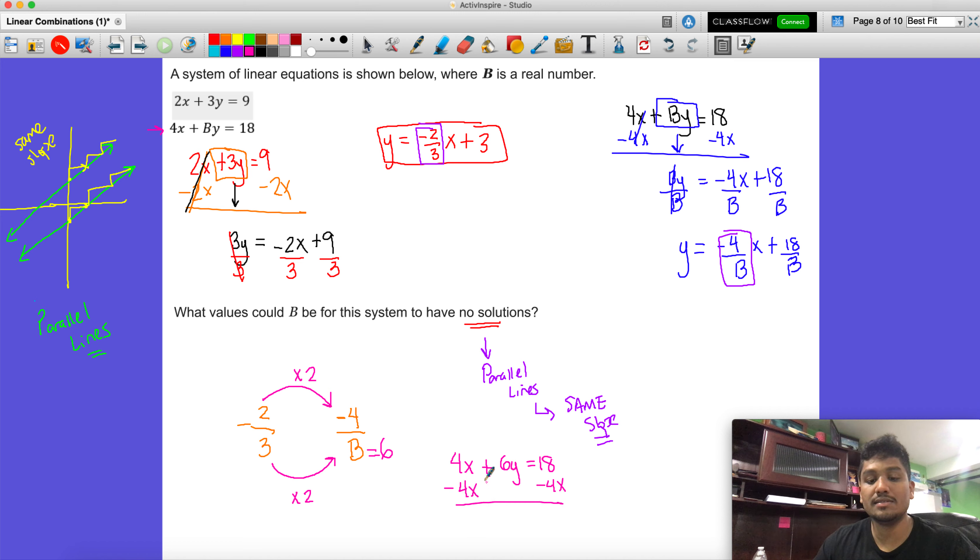You get that 6y is equal to negative 4x plus 18. If we divide everything by 6, we get, if I follow my arrow here, I get y is equal to negative 4 over 6x plus 18 divided by 6 is 3. And if we were to simplify, as we always should, y is equal to negative 2 over 3x plus 3.